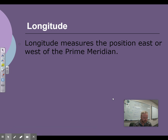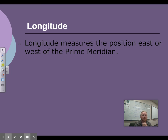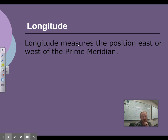Now longitude. Just as latitude goes around the Earth and we have the equator positioned at zero, the prime meridian is what is measured at zero degrees going up and down. Everything is either going east or west in terms of how many degrees it is.